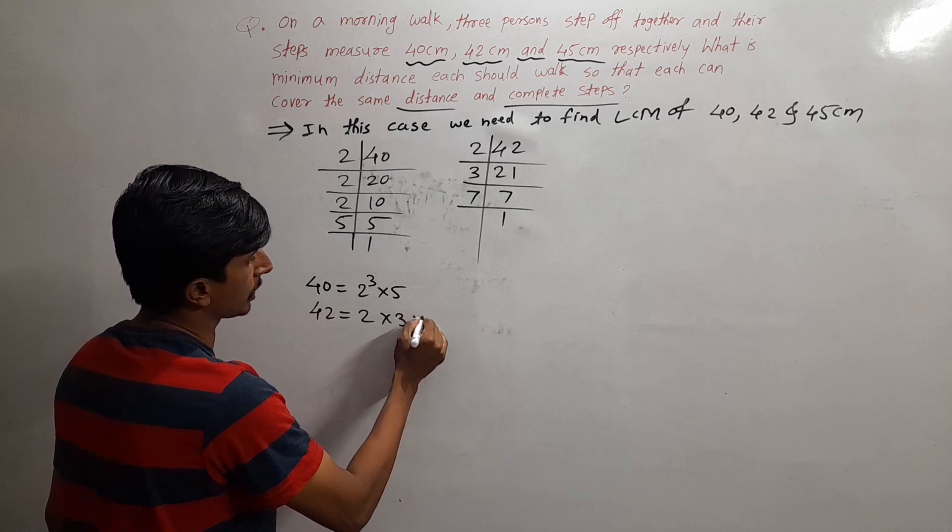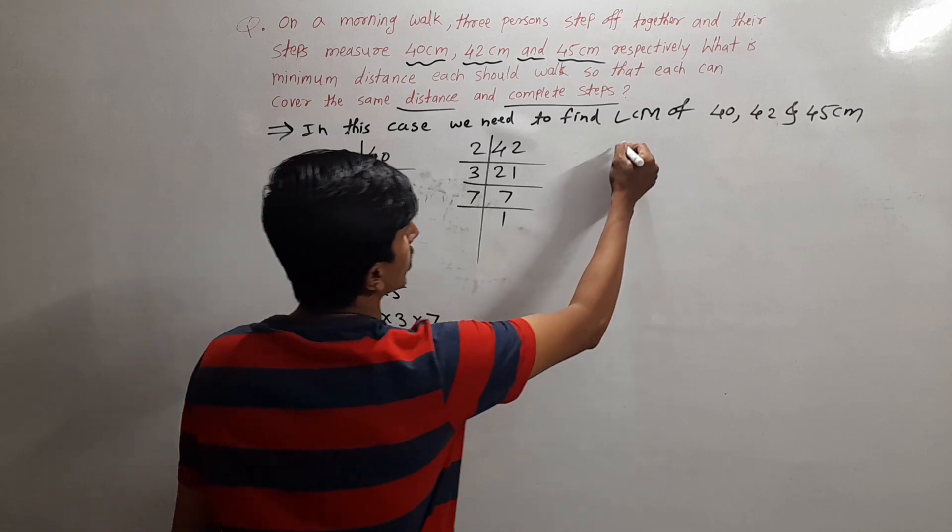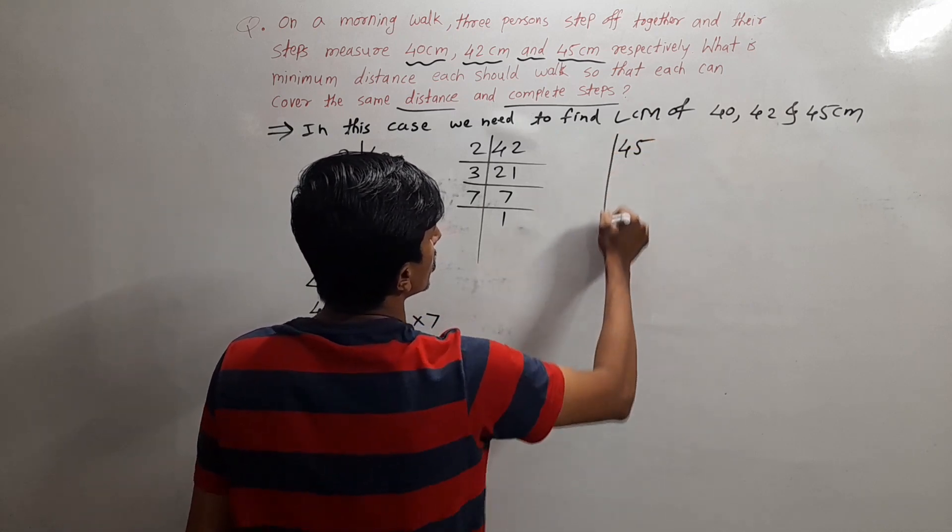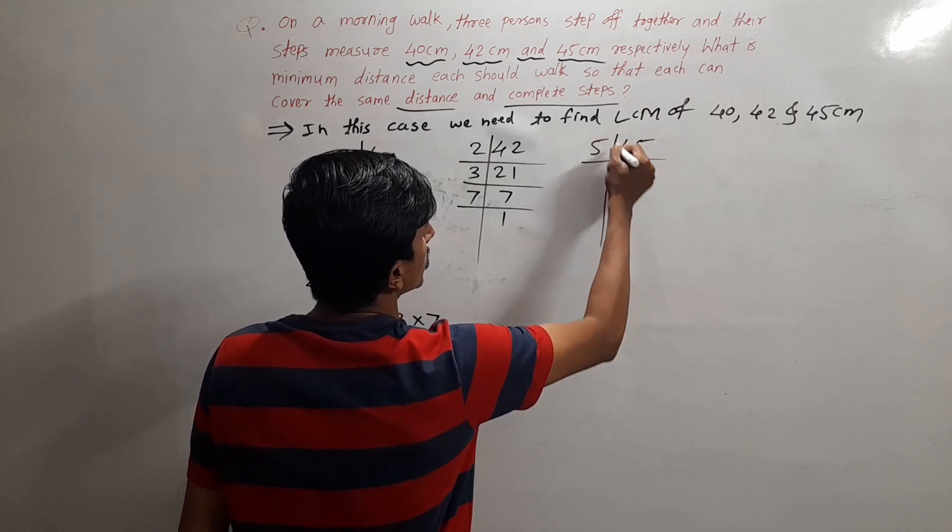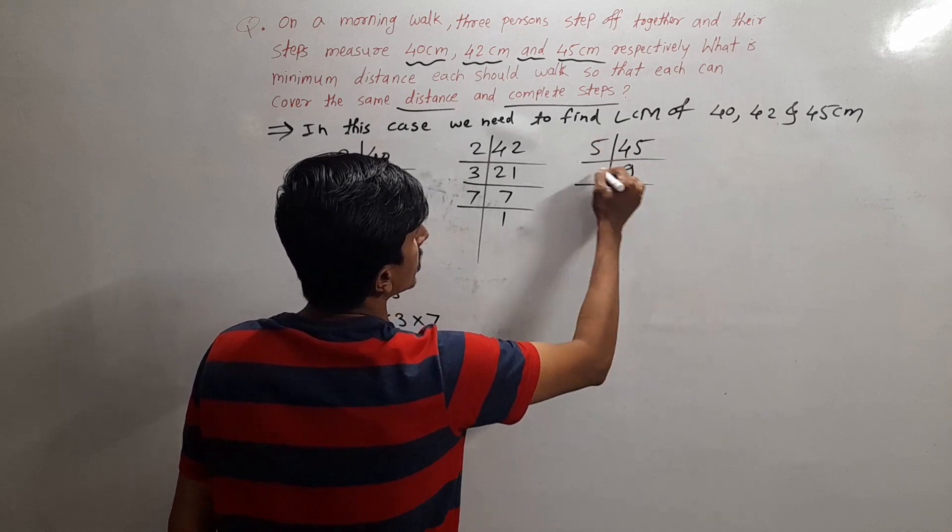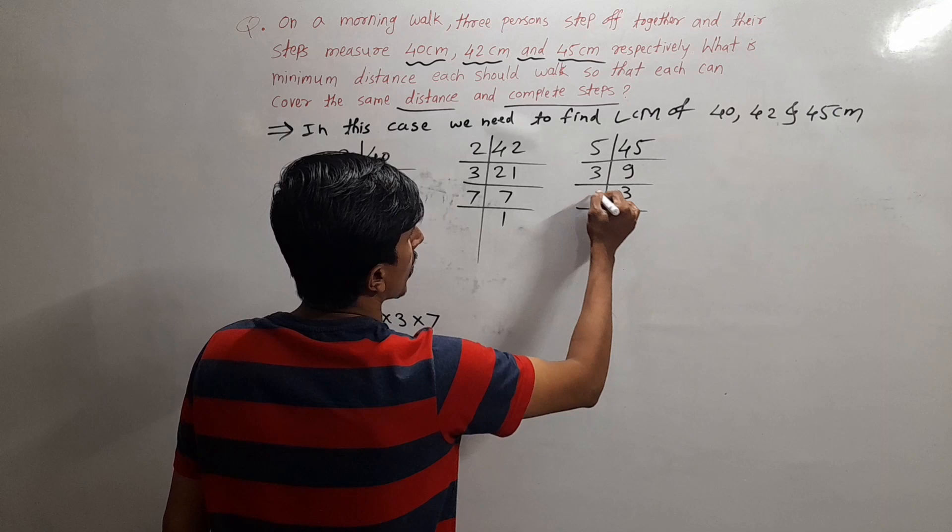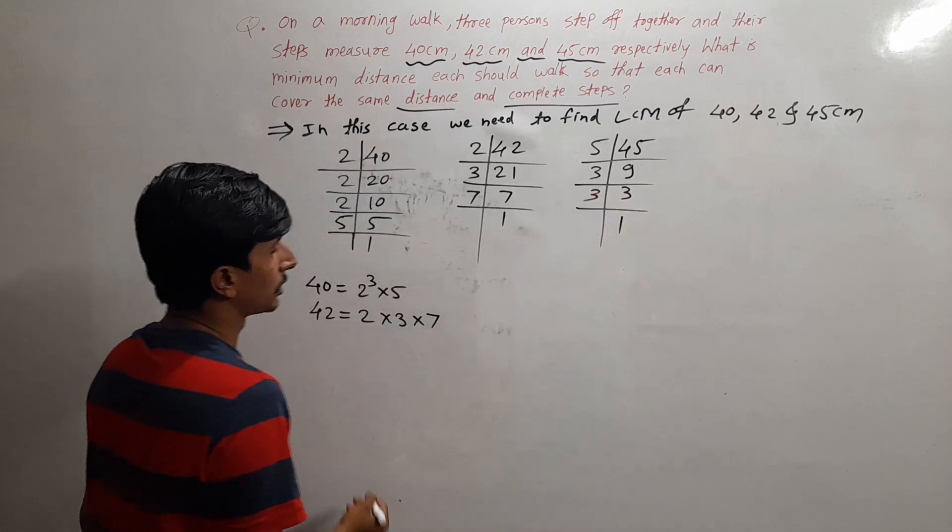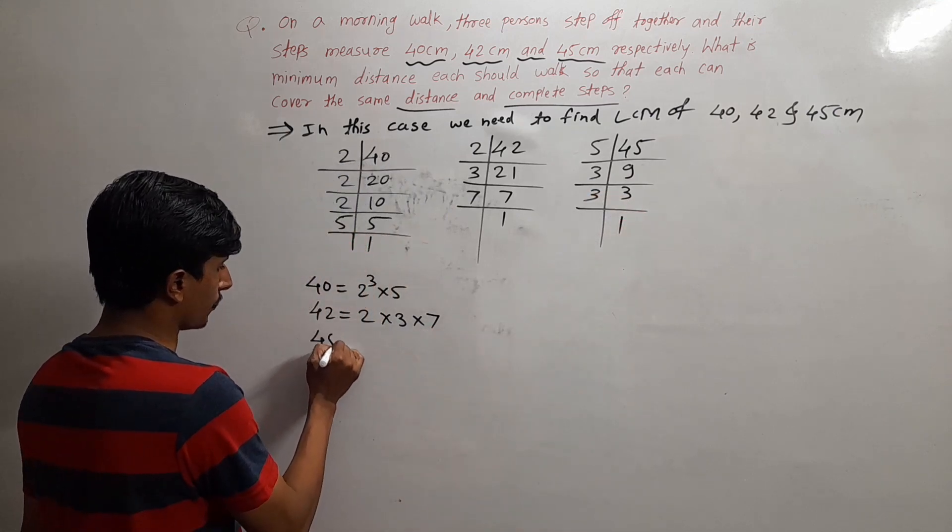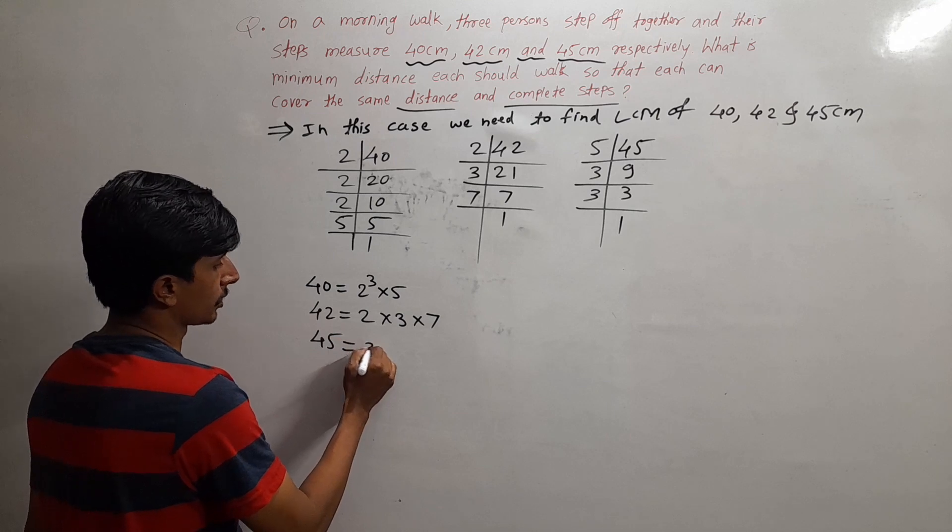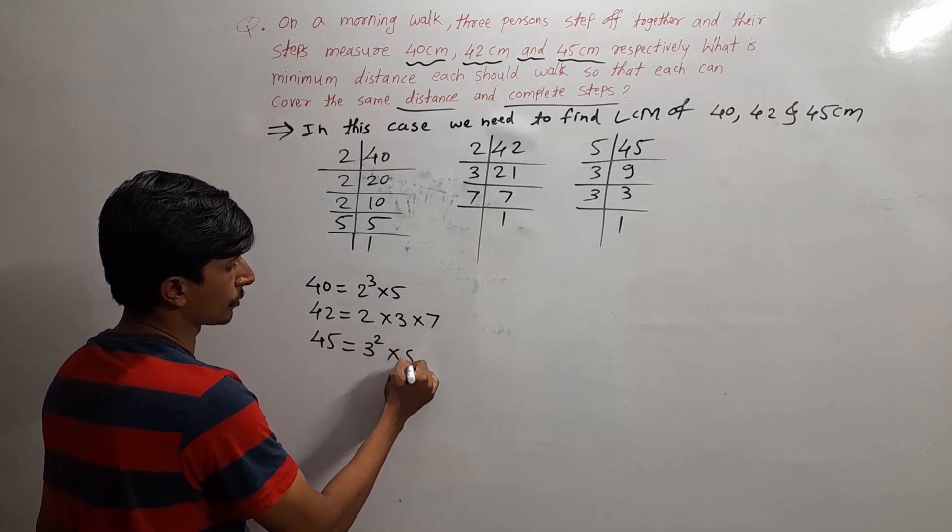Last is 45. Prime factors of 45: 5 times 9, 3 times 3. So for 45 we can write 3² × 5.